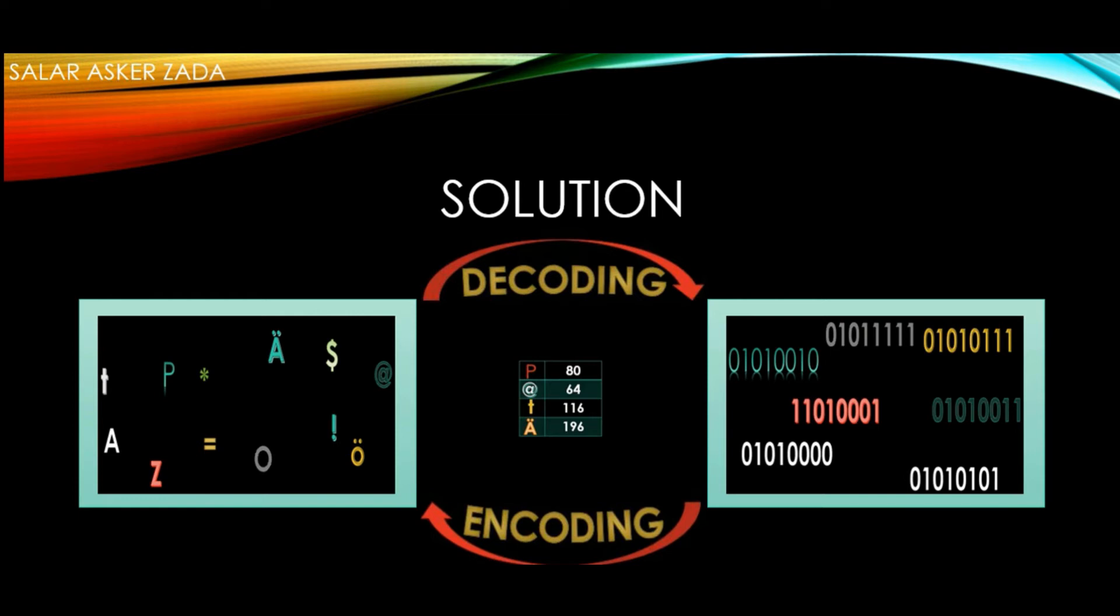Symbols or characters got representation in the form of numbers. Whenever a user wants to send a symbol or character for processing, the computer decoding system contacts the ASCII table and requests for the symbol or character's decimal code. The decimal code is then converted into binary and sent to the computer for processing.